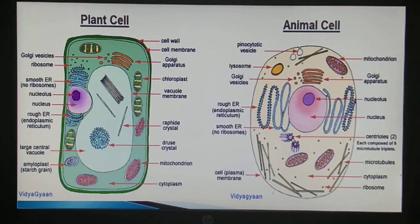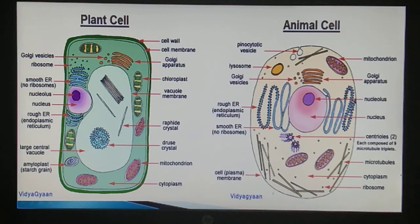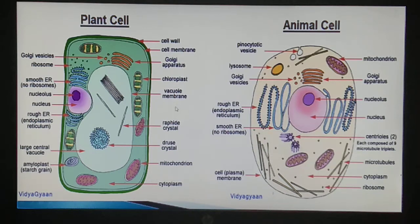In the plant cell we have a vacuole that is larger in size. You can see the sky-blue colored structure - that is the vacuole - and its size is comparatively larger than in the animal cell. Animal cells have centrosomes and centrioles - the purple-like structures - which help in the process of cell division. Centrioles are absent in plant cells.